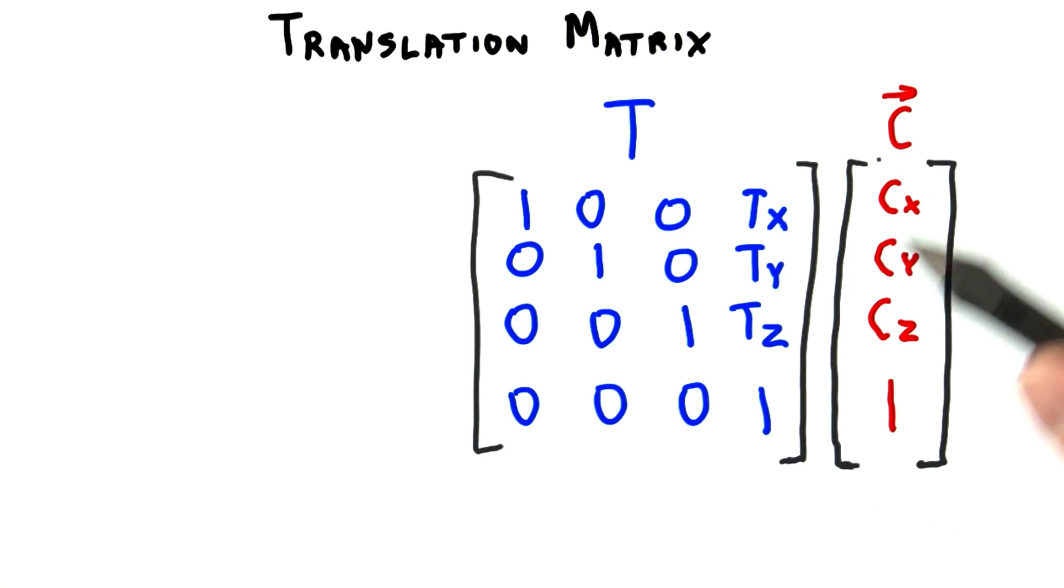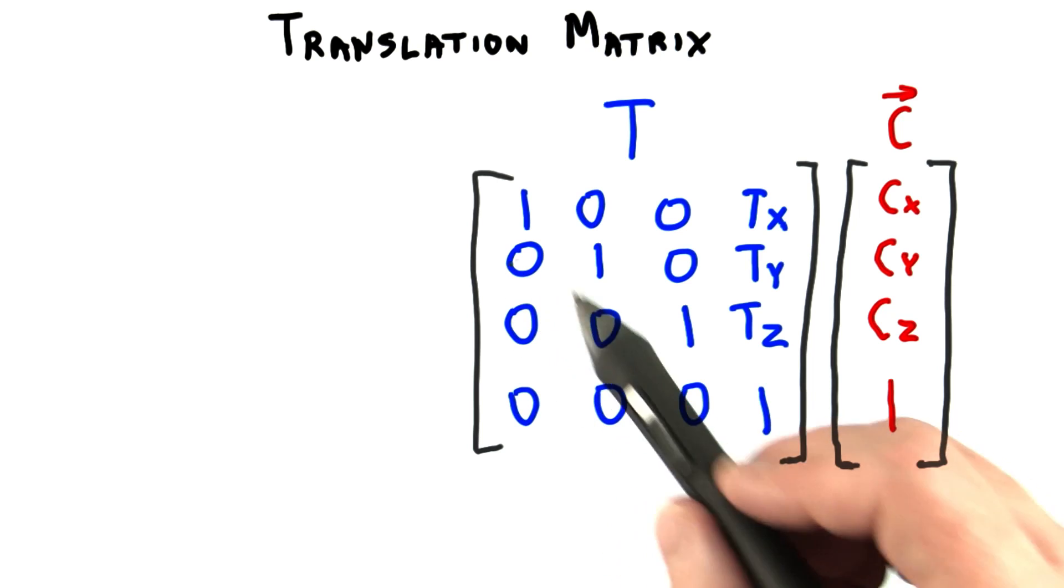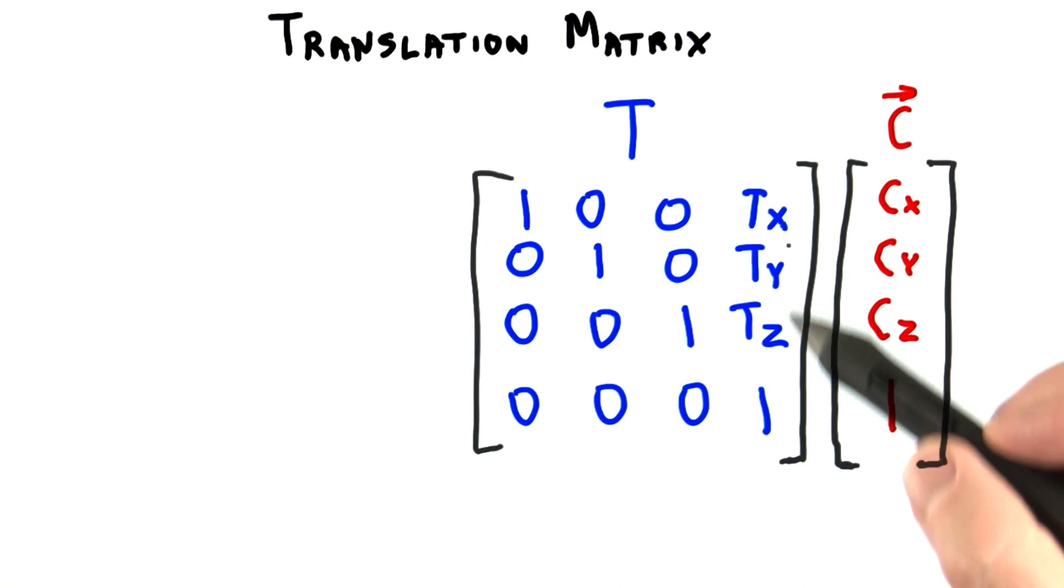If we want to change the location of a point, we can use a translation matrix. This matrix has the translation movement put in the top three positions of the last column.